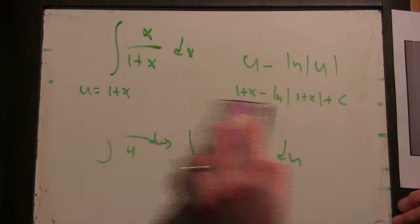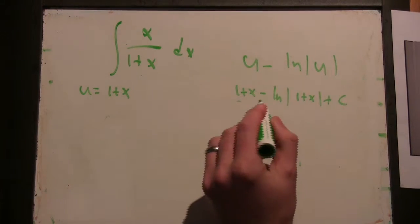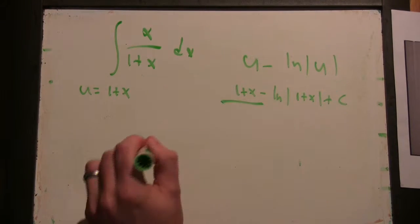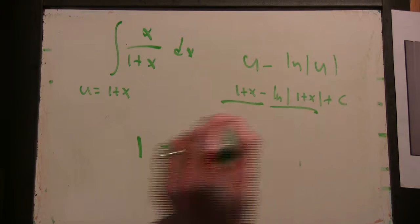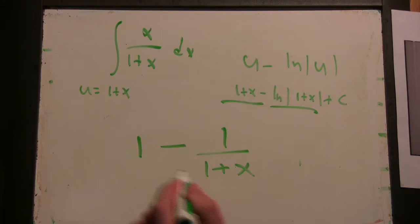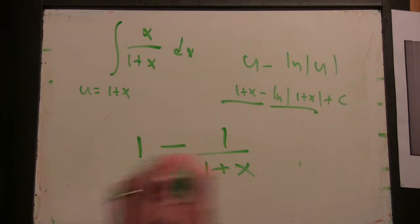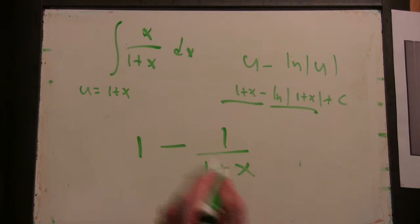And we can check that this actually works because when we differentiate here, we get 1 minus 1 over 1 plus x, which equals 1 plus x minus 1, oh the whole thing over 1 plus x. So you get that.